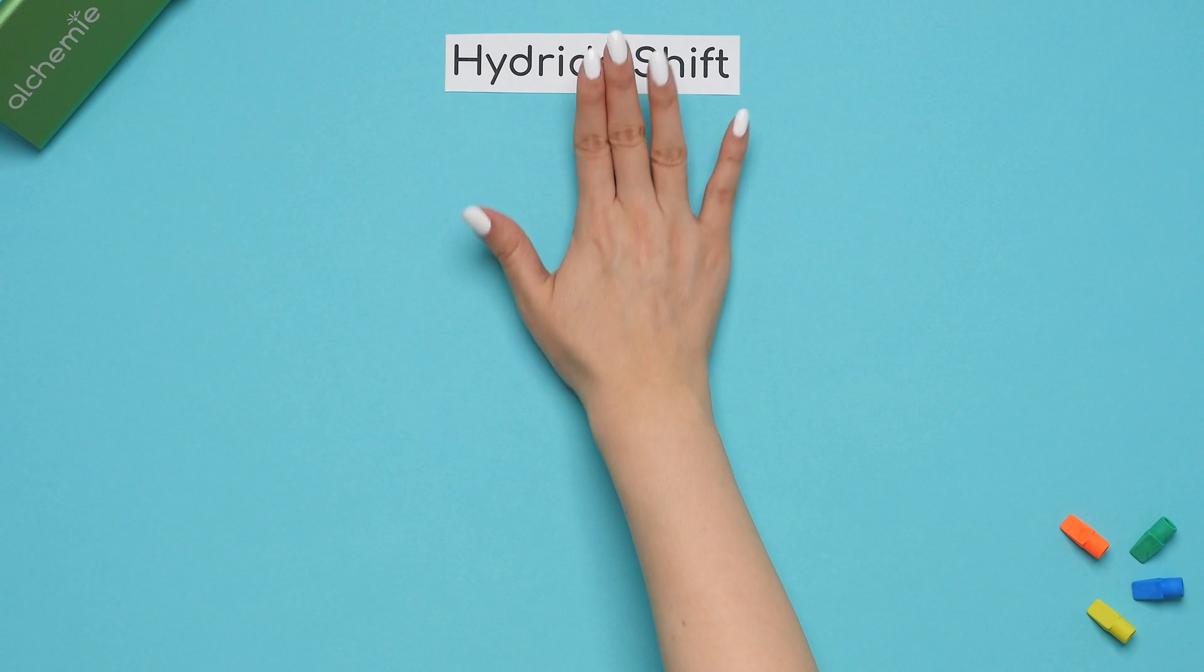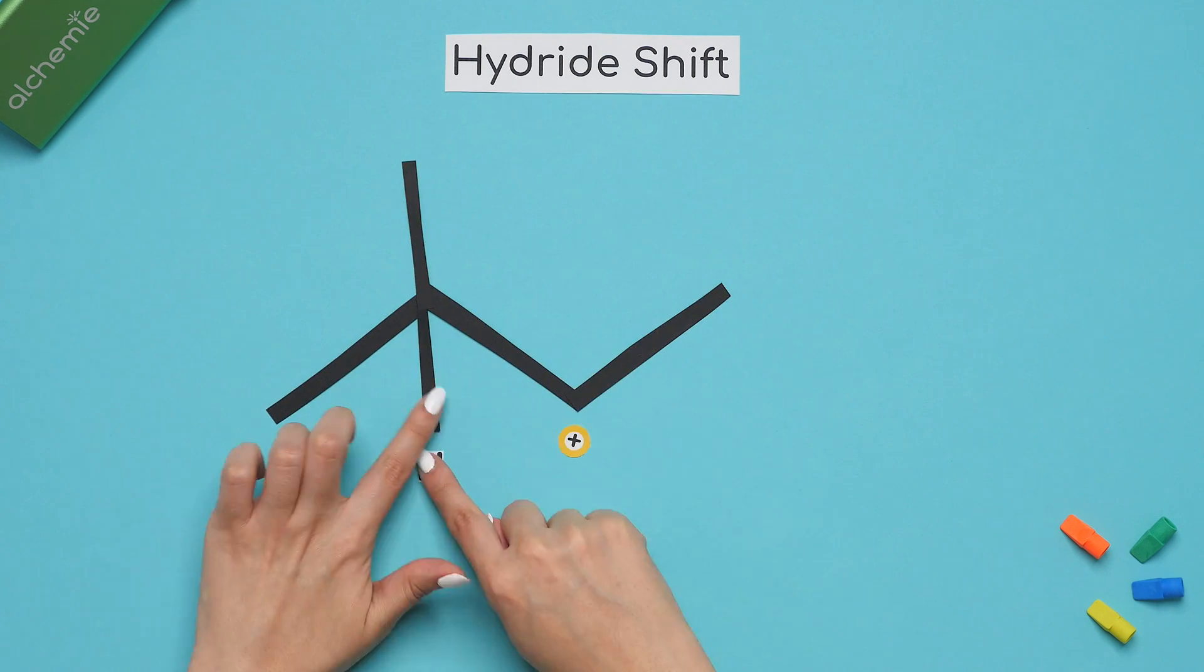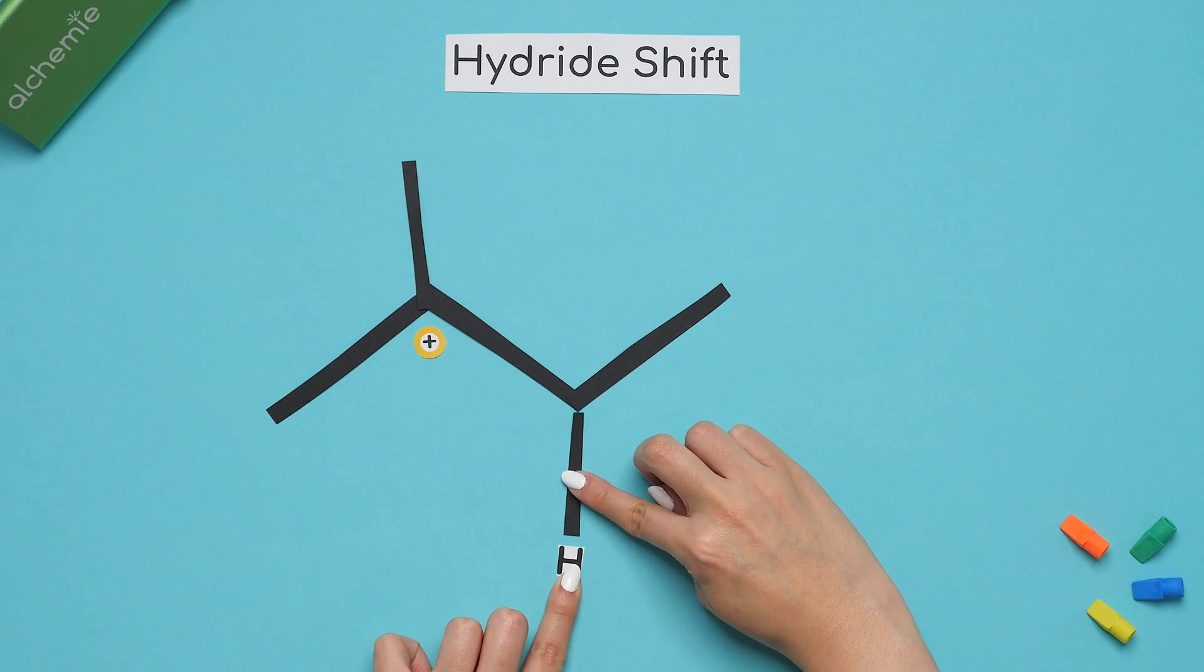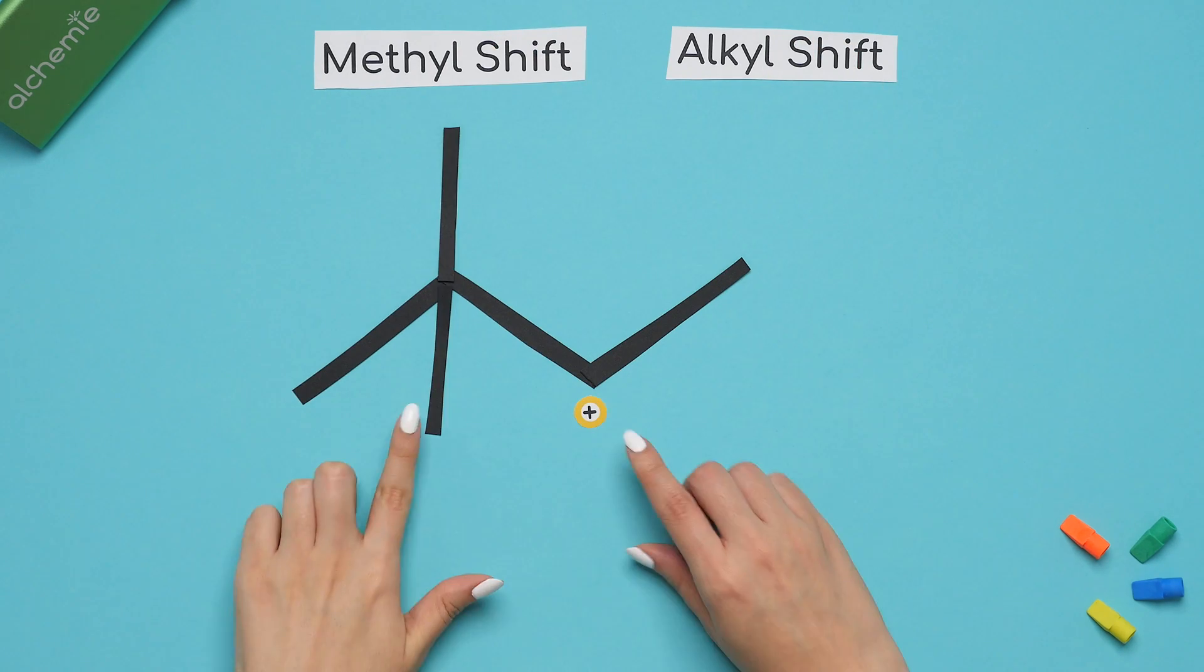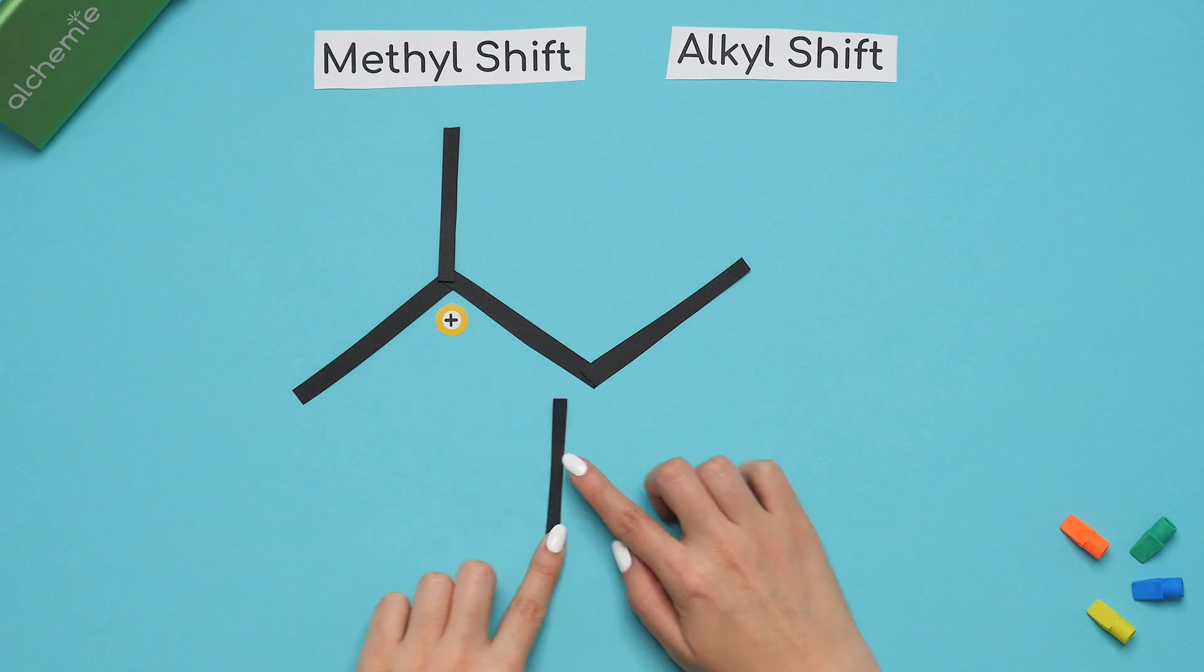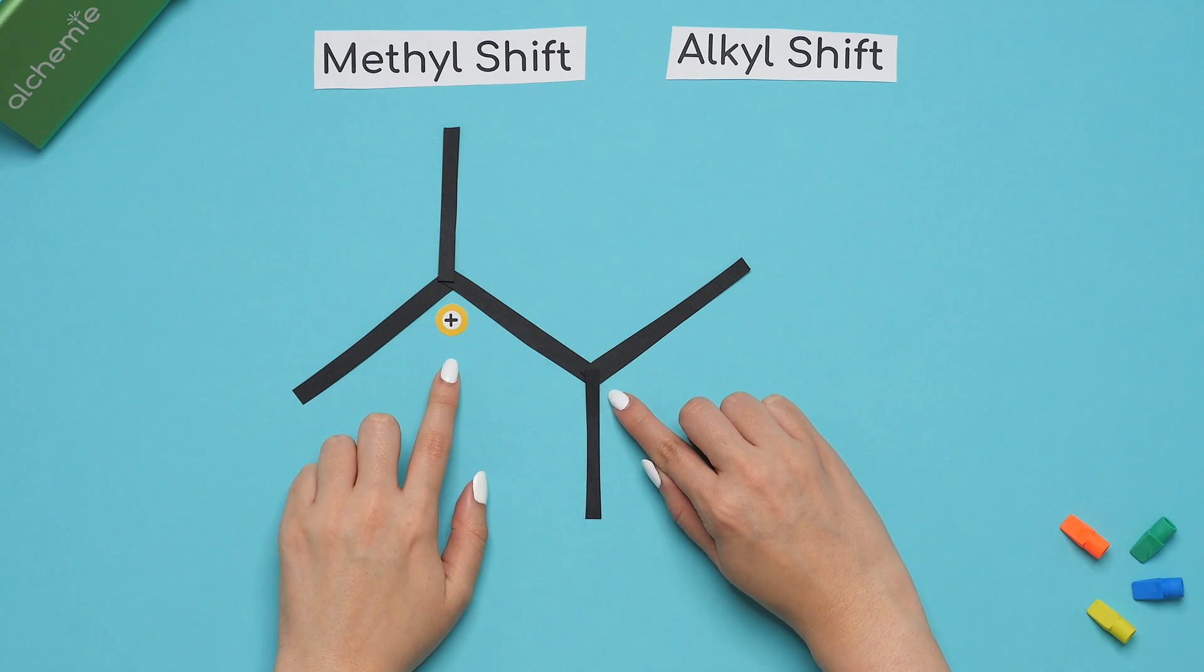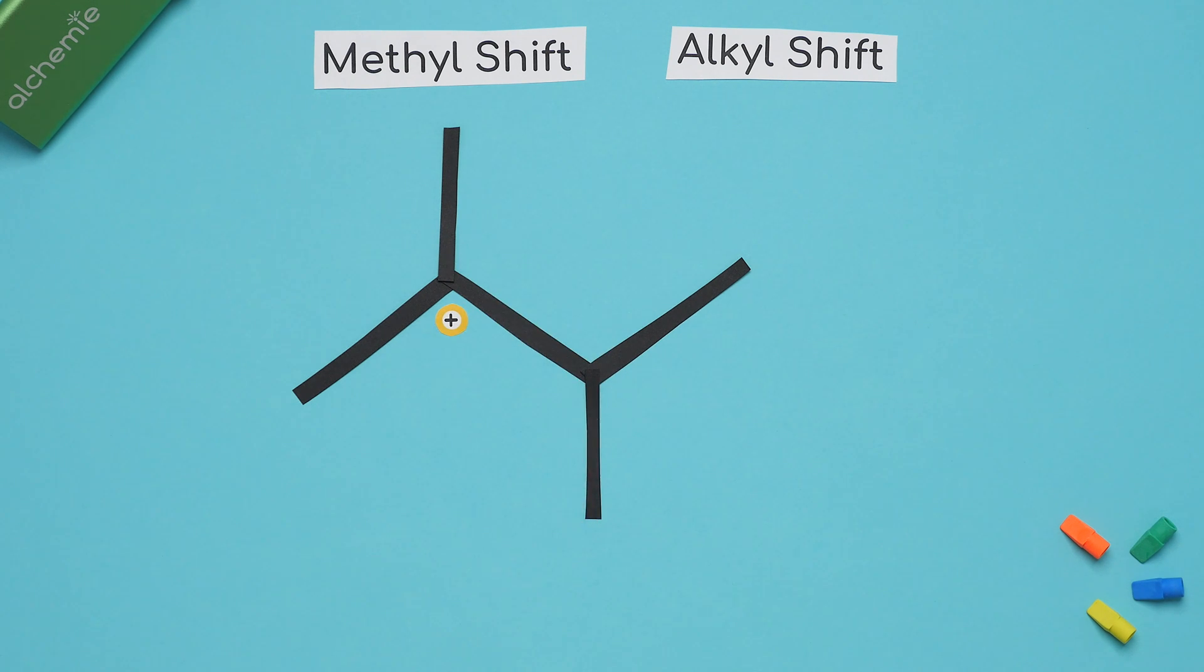A hydride shift is where we move a hydrogen to a different carbon to give us a better carbocation, while a methyl shift or alkyl shift is when we move an entire methyl group or substituent to a different carbon to give us a better carbocation.